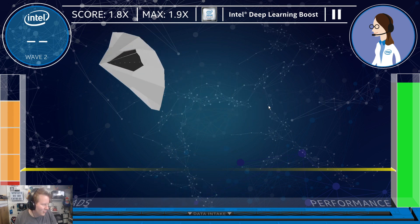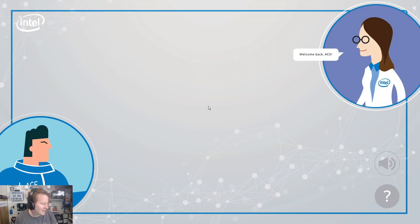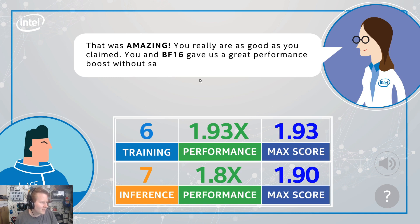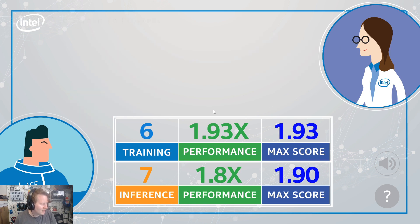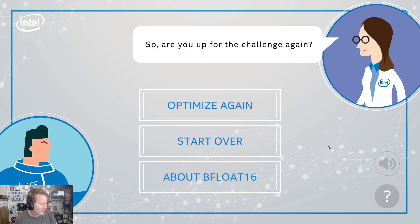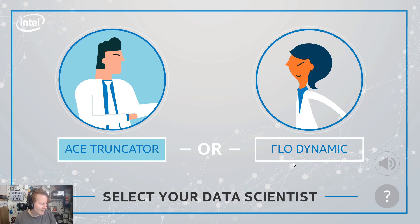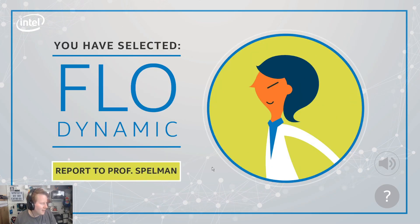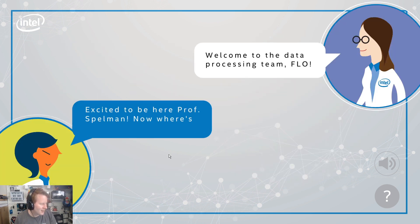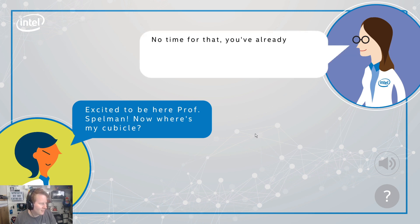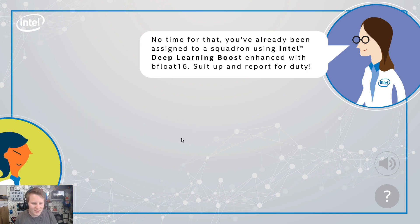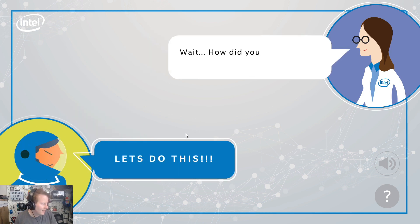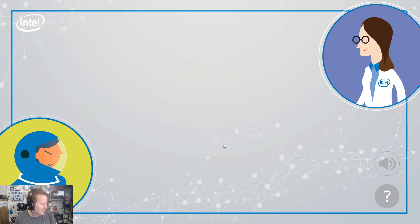Optimisation is complete. 'Welcome back, Ace. Let's see how you did. That was amazing! You really are as good as you claimed. You and BF-16 gave us great performance boost without sacrificing accuracy.' 'I can't take all the credit — BF-16 makes it easy.' Are you up for the challenge again? Let's see if selecting Flow Dynamic makes a difference. 'Welcome to the data processing team, Flow.' 'Excited to be here, Professor Spellman. Now where's my cubicle?' Is this going to be the same text? Yes, it is. Spot where you can see marketing is involved.